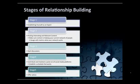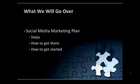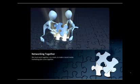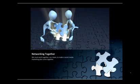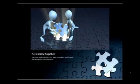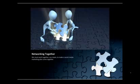Stage five in establishing a relationship is offer advice. Now we're going to go over the social media marketing plan in detail — how to get there and how to get started, so please have your notepad ready. We want to network together and help one another gain business through social media. You have to work together as a team. If you're a one-man show, this isn't going to work — you'll need to outsource to a company like Situated Research, which is a little costly but worth it.